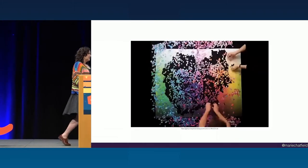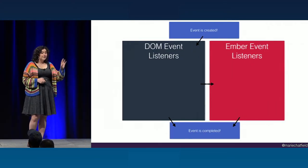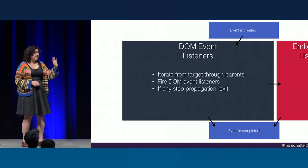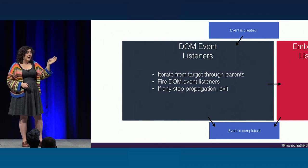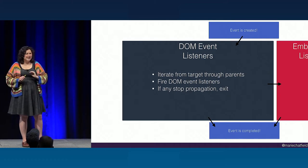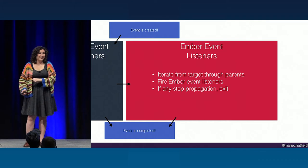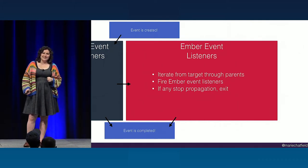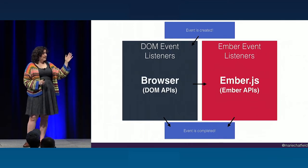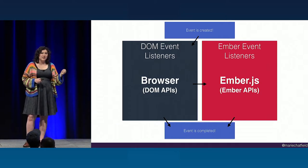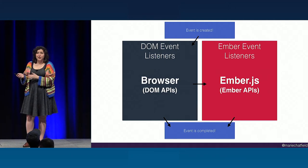So how do DOM event listeners and Ember event listeners actually fit together? When an event is created in your Ember app, first all the DOM event listeners fire, then the Ember event listeners. For DOM event listeners, we start at the target node, cycle through all its parents, and fire any DOM listener we find — if any stop propagation, we immediately exit. But if we make it all the way through, we start back at that original node and cycle back up through all parents again, this time looking for Ember event listeners. When working with DOM event listeners, it's the browser handling that state; when working with Ember events, it's Ember.js source code handling it.